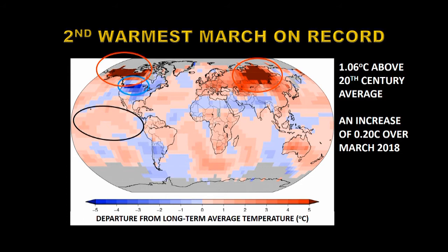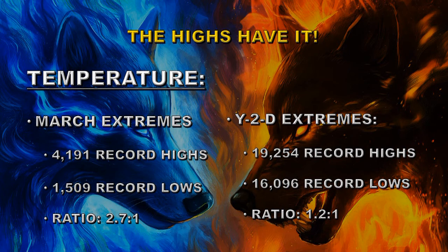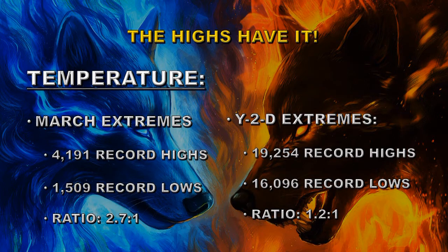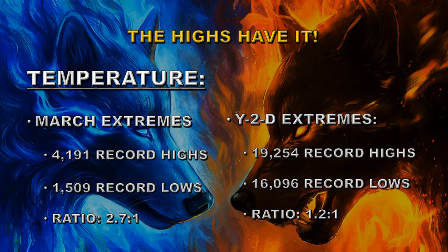This represents an increase of 0.2 degrees centigrade over March of 2018. We can look at this another way by comparing the number of temperature extreme records set in the month. In March there were 4,191 record highs compared with only 1,509 record lows — a ratio of 2.7 to 1. Year to date we've had 19,254 record highs compared with 16,096 record lows, a ratio of 1.2 to 1. In both categories we have an indication that we have a warming world.